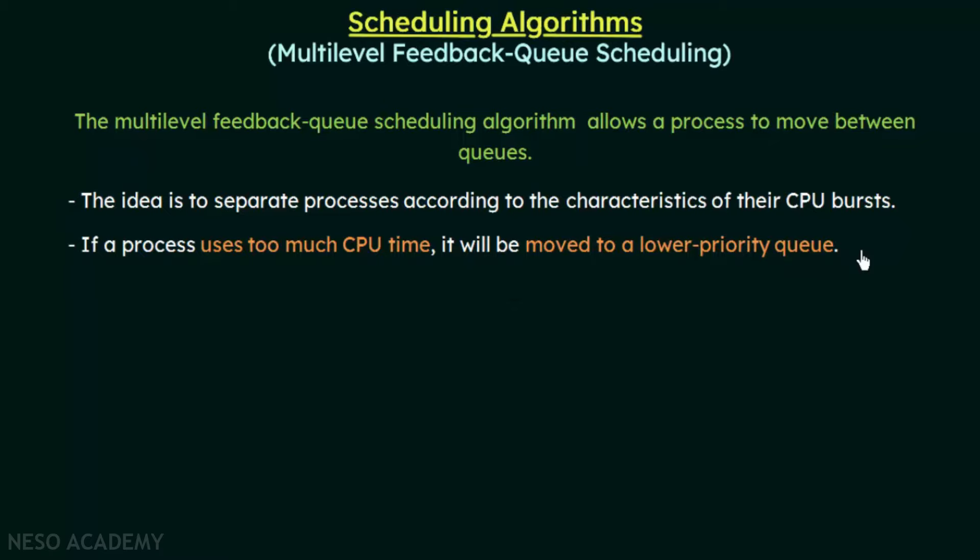Let's say we have certain queues with certain levels of priorities, and there is a process that belongs to a high priority queue which is using the CPU for a very long time. We know that processes belonging to lower priority queues are always waiting for the processes in the higher priority queues to complete their execution. But if the process in the higher priority queue is using the CPU for a very long time, all the other processes end up waiting for a long time. In multi-level queue scheduling, it is impossible to do anything about this. But in multi-level feedback queue scheduling, we can move that process from the higher priority queue to a lower priority queue, so that other processes can complete their execution and everybody gets a chance.